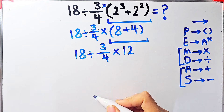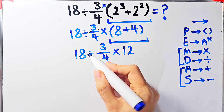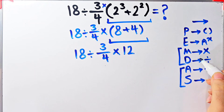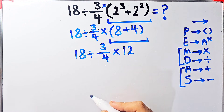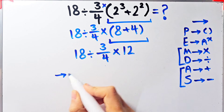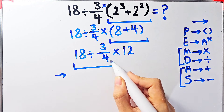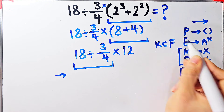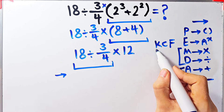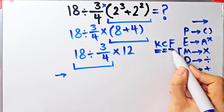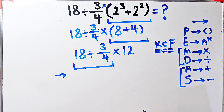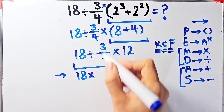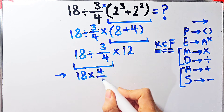Now we have division and multiplication. Since they have the same level of priority, we start from the left. We have 18 divided by 3/4. To solve this we use the KCF rule: K stands for Keep, C stands for Change, and F stands for Flip. We keep the first number as it is, change the division sign to multiplication, and flip the second fraction.